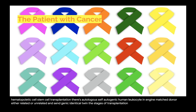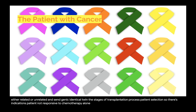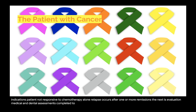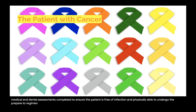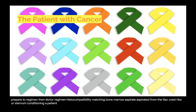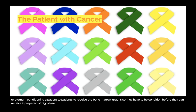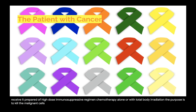The stages of the transplantation process include patient selection — indicated when the patient is not responsive to chemotherapy alone, or when relapse occurs after one or more remissions. Evaluation involves medical and dental assessments completed to ensure the patient is free of infection and physically able to undergo the preparative regimen. The donor regimen involves histocompatibility matching and bone marrow aspirated from the iliac crest, ribs, or sternum. Conditioning prepares the patient with a high-dose immunosuppressive regimen of chemotherapy alone or with total body irradiation, to kill malignant cells and suppress the immune system so new stem cells will engraft.